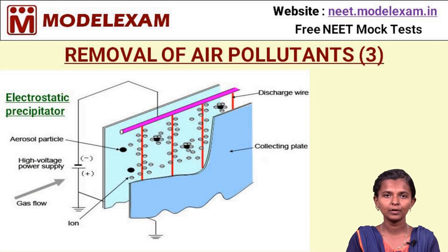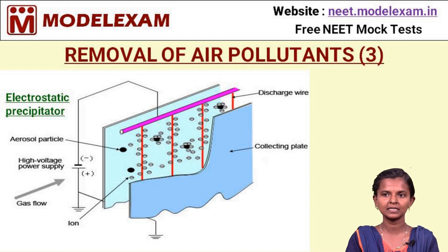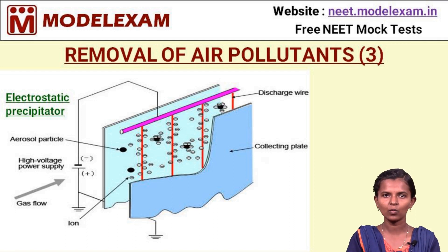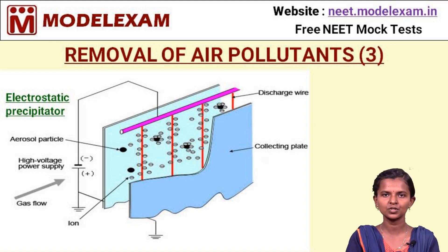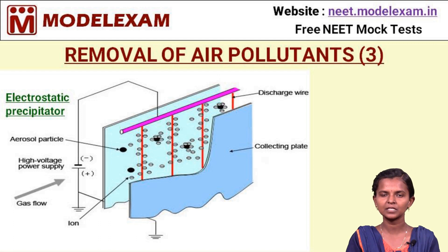Removal of Air Pollutants, Part 3. This is a diagram showing how the electrostatic precipitator works and its component parts. A high voltage power supply is present, releasing negatively charged electrons — the ions. It also has gas flow and a discharge wire. The other particles and substances are collected in the collection plate. This is how an electrostatic precipitator looks.